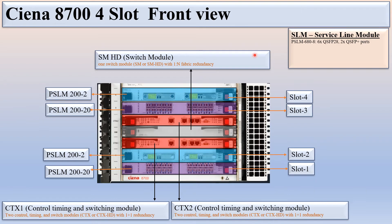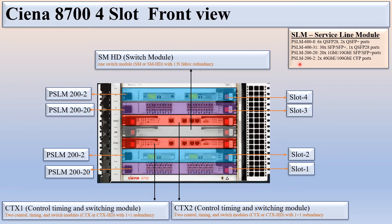SLM stands for service line module. In PSLM 680-8 there are 6x QSFP28 and 2x SFP+ ports. In PSLM 400-31 there are 30x SFP/SFP+ ports and 1x QSFP28 port. In PSLM 200-20 there are 20x 1G or 10G SFP/SFP+ ports. In CSLM 200-20 there are 20x 100G CFP ports, and in CSLM 200 there are 20x 100G OTU4 RAV ports.